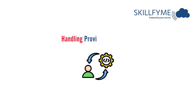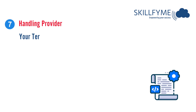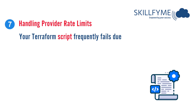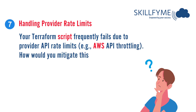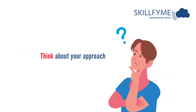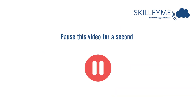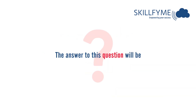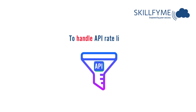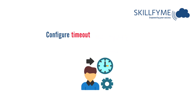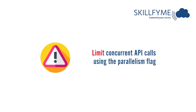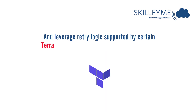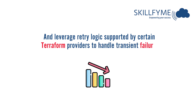The next question is about handling provider rate limits: your Terraform script frequently fails due to provider API rate limits — for example, AWS API throttling. To handle this, configure timeouts in resource definitions to extend wait times, limit concurrent API calls using the parallelism flag, and leverage retry logic supported by certain Terraform providers to handle transient failures.